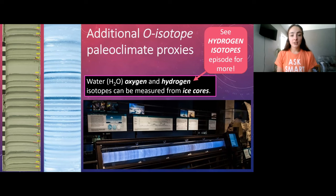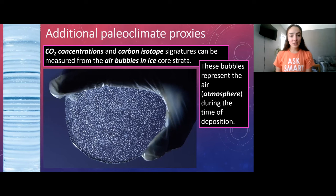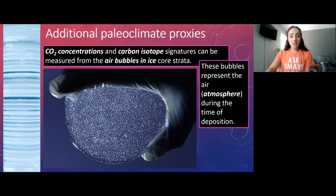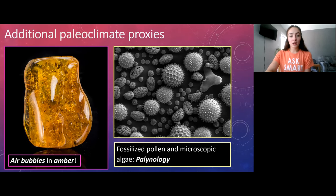We can also use deuterium-to-hydrogen ratios from ice cores, which we'll cover in a different isotope video. Ice cores are also useful for the air bubbles they trap — allowing us to use oxygen, hydrogen, and carbon ratios to understand the atmosphere during the time that ice was accumulating. Air bubbles are also found in amber, which can preserve ancient air for extraction and compositional analysis. Additionally, fossilized pollen studied through palynology provides further climate proxies, which we'll discuss in the carbon isotope lecture.